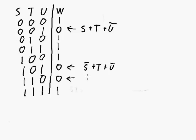And for the third row, S is a one, so it's in the inverted form. T is a one, so it's in the inverted form. And U is a zero, so it's not inverted.